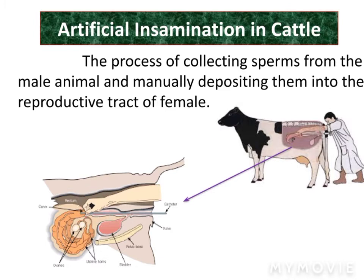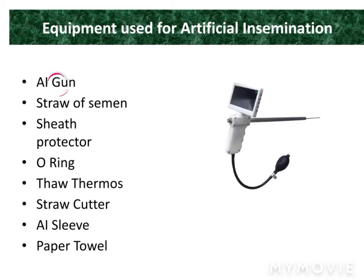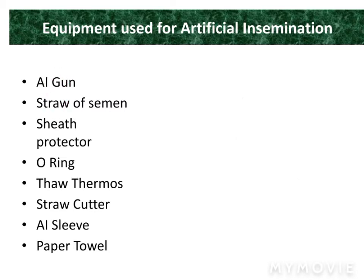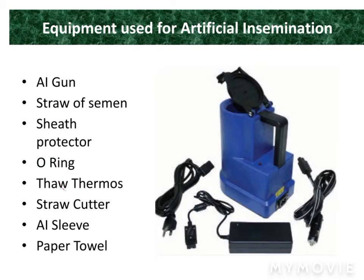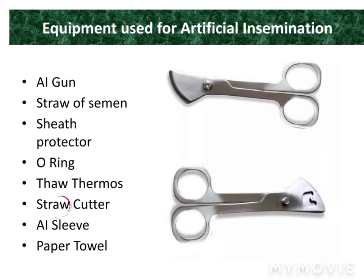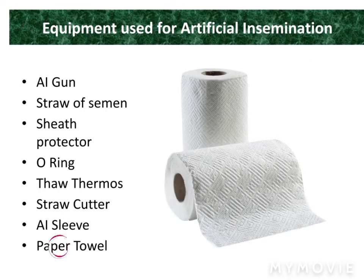Equipment used for AI includes: AI gun, straw of semen, sheath protector, O-ring, hormones, straw cutter, sleeves, and paper towel.